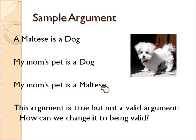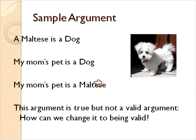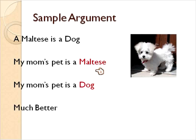Because all Maltese are dogs, but not every single dog is a Maltese. So in the previous version, my mom's pet is a dog — she could have a Great Dane, a Yorkshire Terrier, a German Shepherd, or a Pit Bull. We can't say that just because a Maltese is a dog, therefore her dog is a Maltese. That argument wouldn't hold water. So even though an argument may be true, it might not be a valid argument. You need to make sure to arrange the premises of an argument so that it is valid.